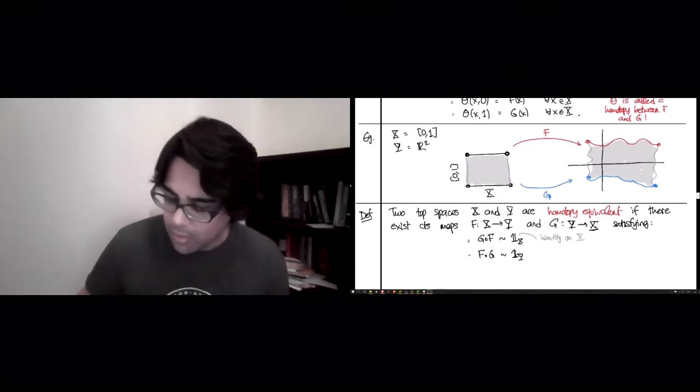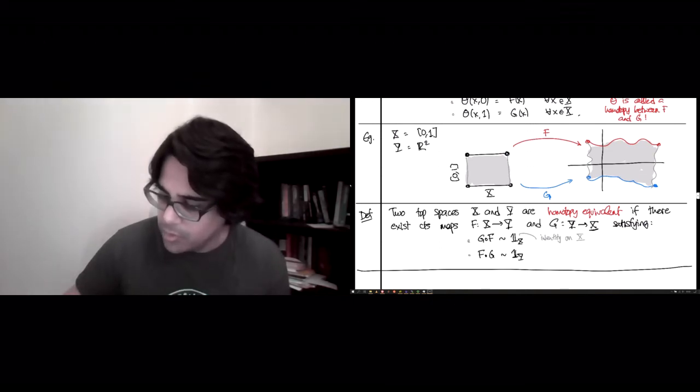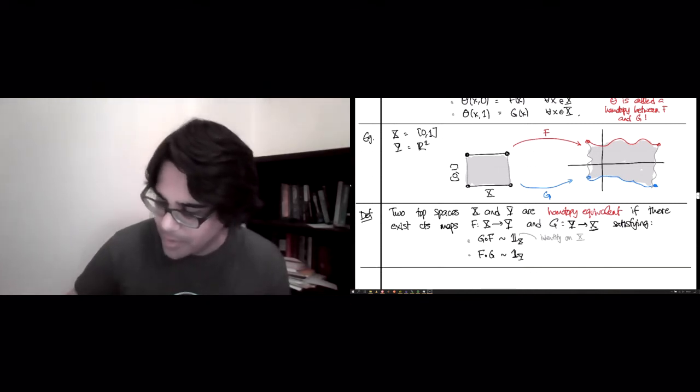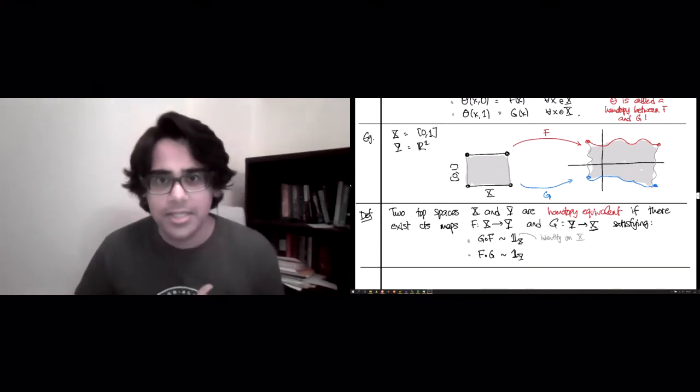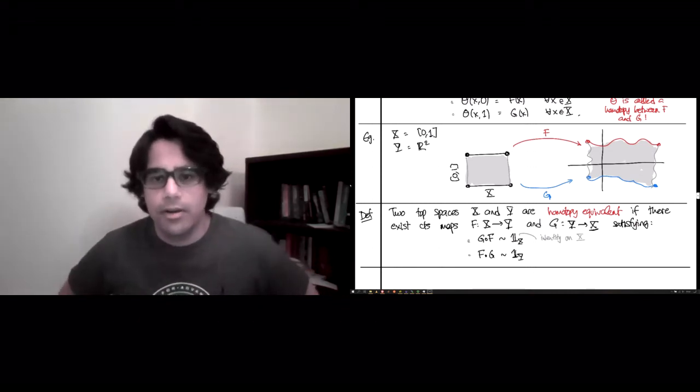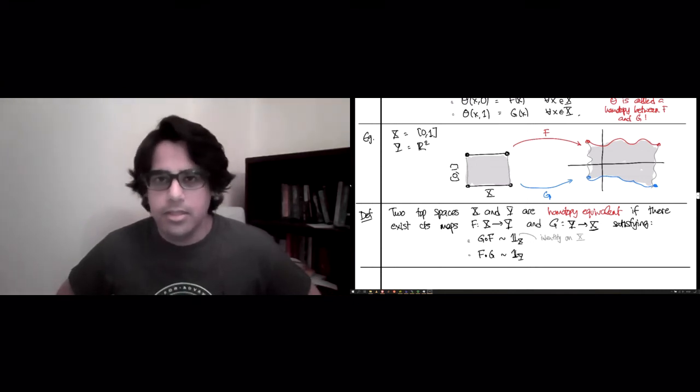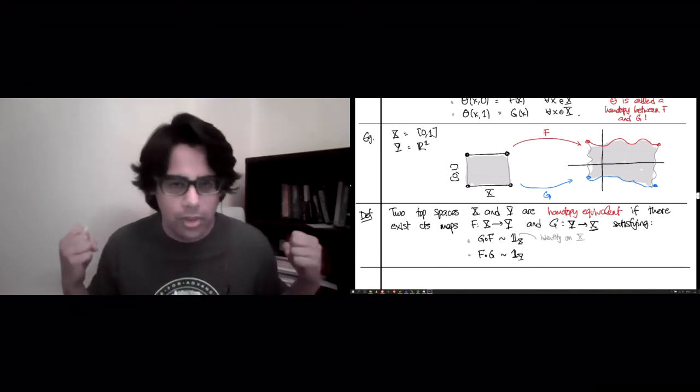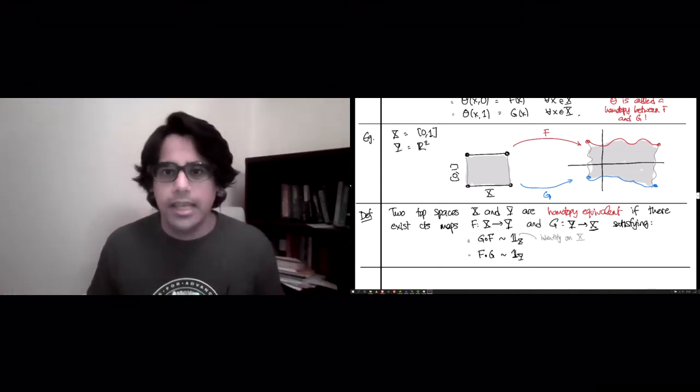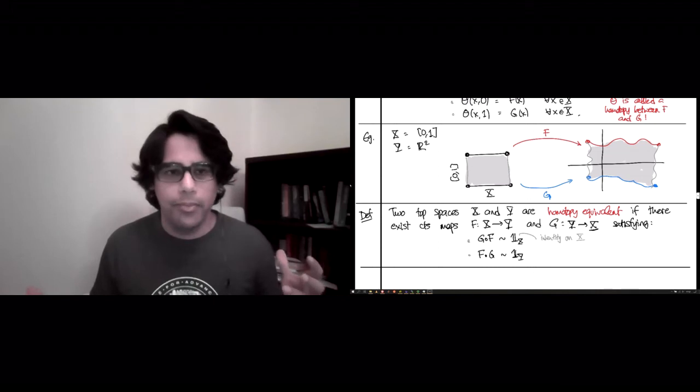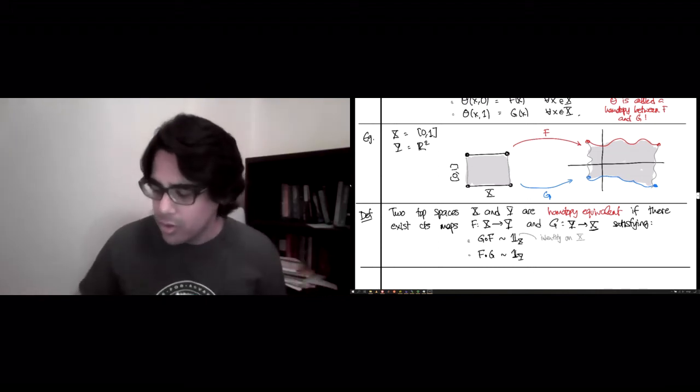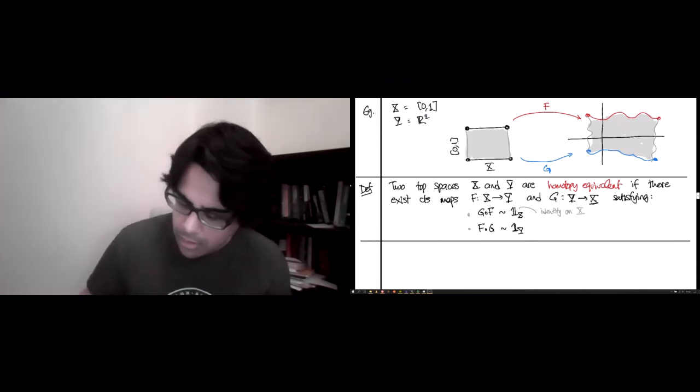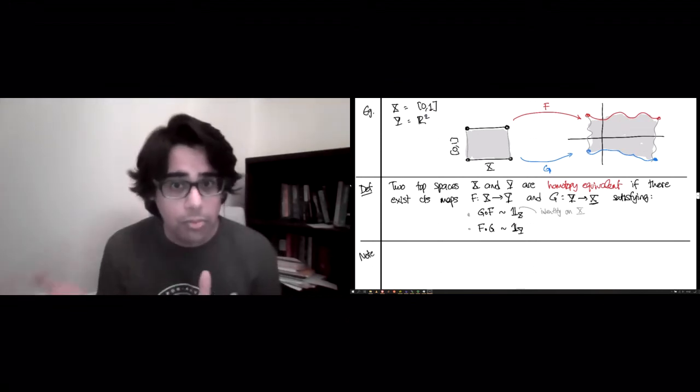So this is what it takes for two topological spaces to be homotopy equivalent. Now, people tend to underestimate this the first time they see it. The definition looks not very scary. But the trouble is, all these 'there exists' floating around. If someone just hands you two topological spaces, even if they're just simplicial complexes, it is extremely difficult to find out whether these maps exist or not. It's not an easily computable thing.